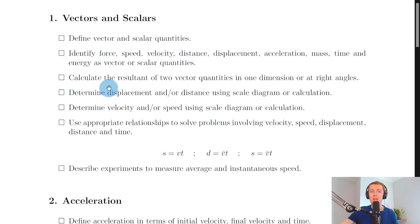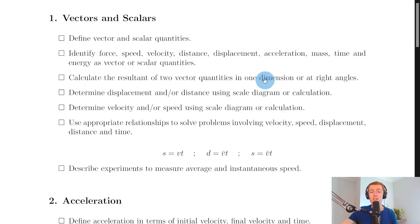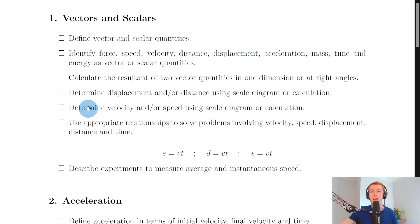You also need to be able to calculate the resultant of two vector quantities in one dimension or at right angles. The key rule when adding any two vectors together is that you need to add them nose to tail. Vectors in one dimension are simpler, but when we add vectors at right angles nose to tail we end up drawing the resultant vector which forms a right angle triangle.